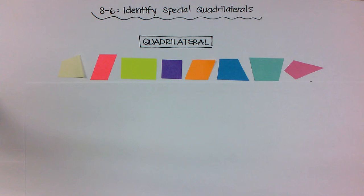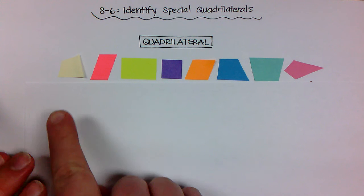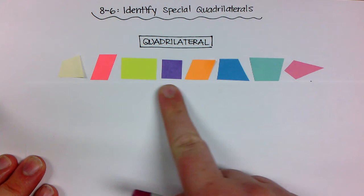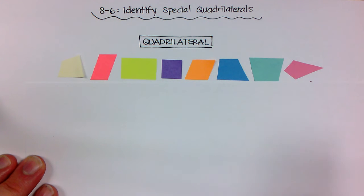Now we've learned about all the specific types of quadrilaterals in this chapter. So as you can see here, I have a variety of four-sided shapes. All the sides are straight, so all of these would be considered a quadrilateral. But a lot of them we can break down into more specifics.